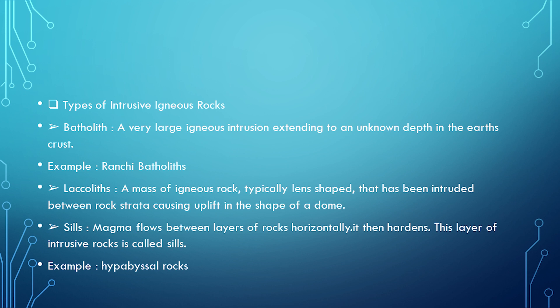Types of intrusive igneous rocks: batholith, laccolith, sills, dykes, and necks. A batholith is a very large igneous mass extending to an unknown depth in the earth's crust. Example: Ranchi batholith. A laccolith is a mass of igneous rock, typically lens-shaped, that has been intruded between rock strata causing uplift in the shape of a dome. Sills form when magma flows between layers of rock horizontally and then hardens; this layer of intrusive rock is called a sill.